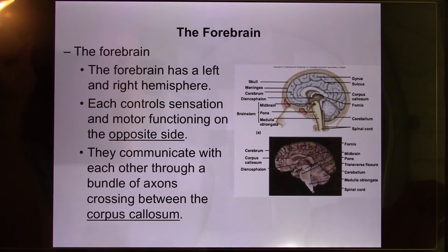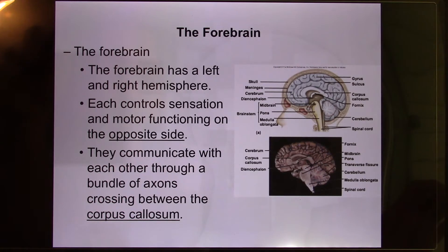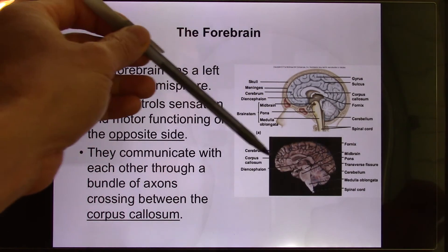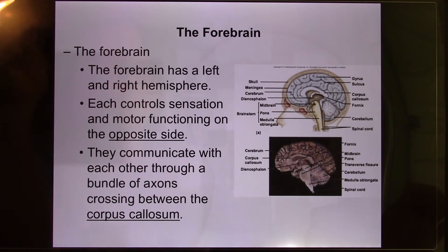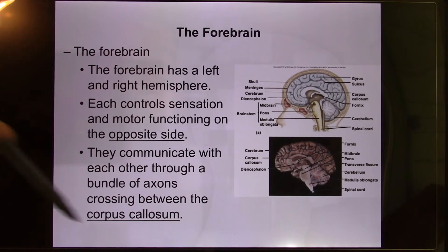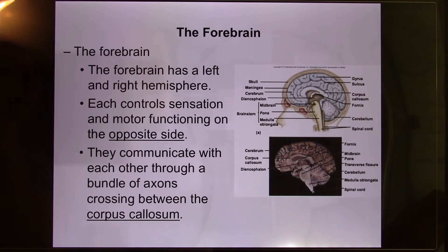Doctors opened the skull and cut the corpus callosum to localize the epilepsy, thinking they hadn't damaged any neurons. After the cut, the epilepsy was indeed localized — it would start in the left brain but couldn't reach the right brain. However, there were serious side effects. Patients reported feeling like another person was living in their head trying to take over their body. Their left hand might grab something to throw at a nurse while the right hand tried to stop it. This is called split-brain syndrome. Eventually, doctors realized they needed to leave the brain alone.